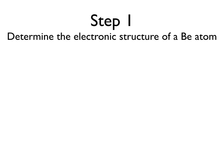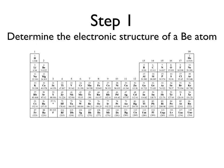In order to determine the electronic structure of the molecule, first we need to determine the structure of each beryllium atom. So here we have a periodic table, and first we have to find out where beryllium is — it's right there.